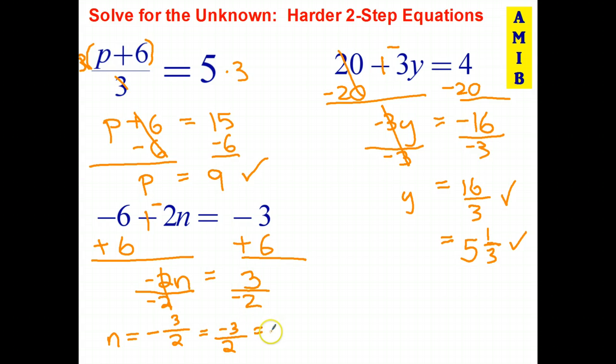And then of course, you could also write it as a mixed number. So negative 1 and one half. Once again, I suggest you don't try to substitute this back into there unless you have a calculator. The better way to check it is to just carefully go through the steps and make sure you've done everything correctly.